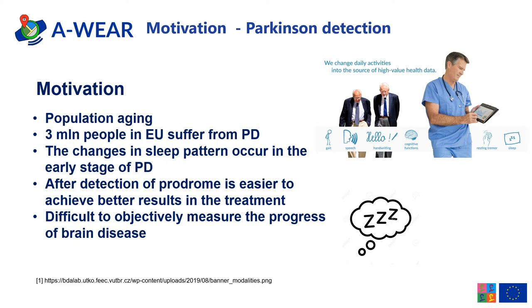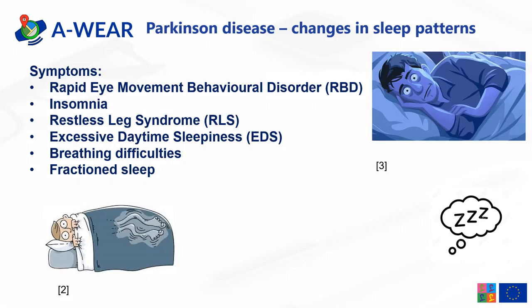One of the symptoms observed in the early stage of PD are sleep disorders. The sleep-related symptoms occurring are presented on this slide. Starting with rapid eye movement behavioral disorder, this mostly manifests in elder age. The main symptom is loss of muscle tone during the REM part of sleep. Patients may talk, gesture, kick, and could dream.